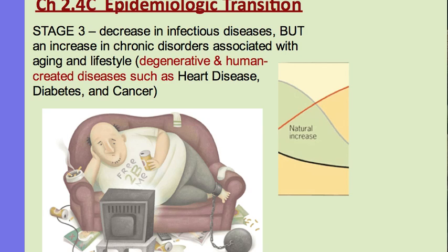Stage 3 diseases are not infectious — that was dealt with in stage 2. The diseases come from old age and degenerative processes, or from lifestyle choices and chronic diseases people bring on themselves: eating too much, not exercising, smoking. These are not contagious — people can't get heart disease from being sneezed on by someone who has it. These are stage 3 epidemiological diseases driven by lifestyle choices.